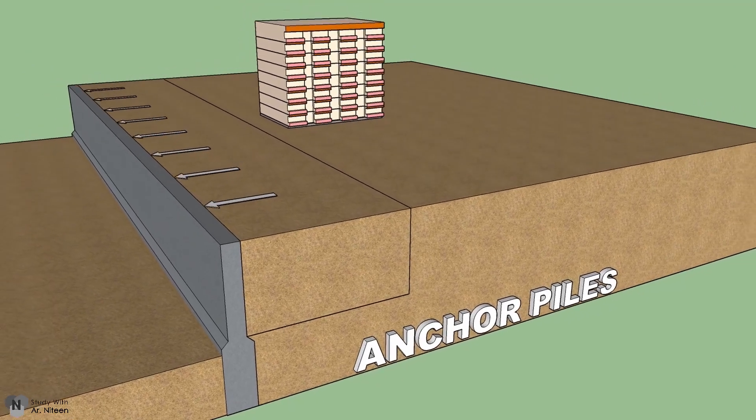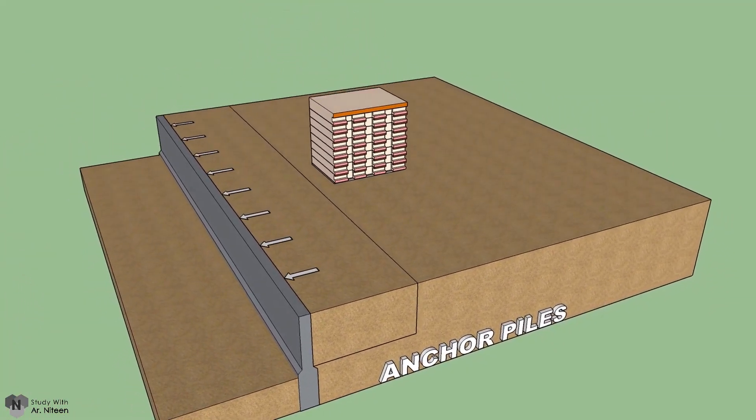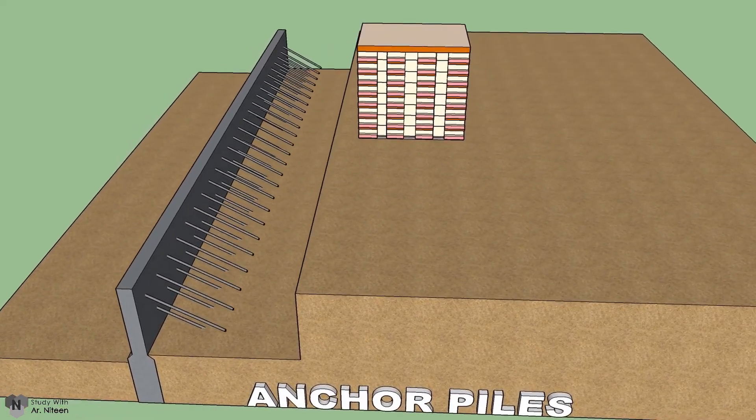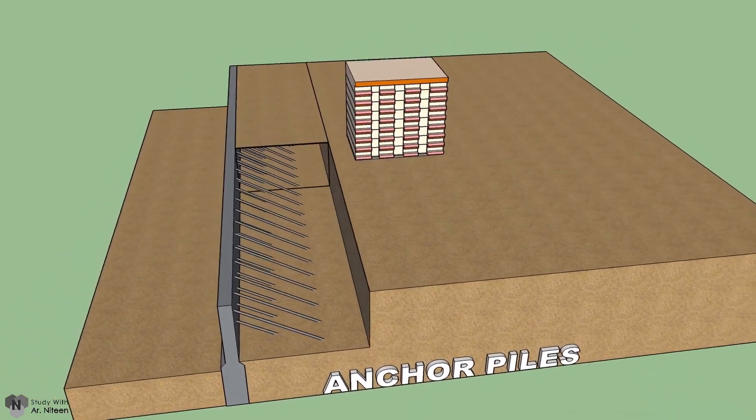Anchor piles are those piles which support horizontal pressure. Normally these piles are given to vertical walls which support as a retaining to the soil.